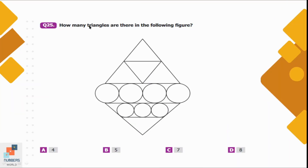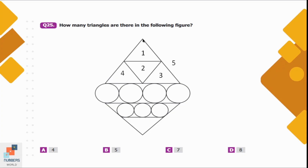Question number 25: How many triangles are there in the given figure? Counting carefully: 1, 2, 3, 4 small triangles, then a 5th triangle covering all 4, a 6th triangle, and a 7th triangle which includes the previous triangles. There are 7 triangles in total. Option C is the correct option.